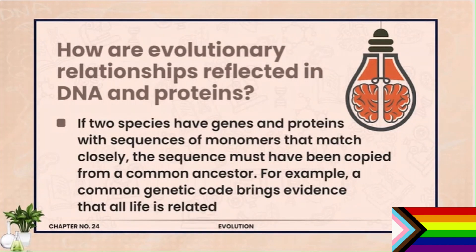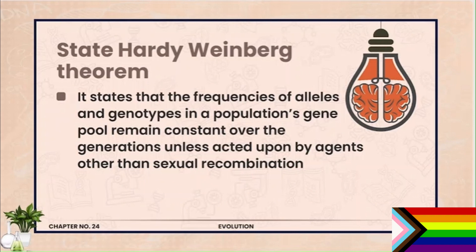Question number 7: How are evolutionary relationships reflected in DNA and proteins? If two species have genes and proteins with sequences of monomers that match closely, the sequence must have been copied from a common ancestor. For example, a common genetic code brings evidence that all life is related. Question number 8: State the Hardy-Weinberg theorem. The frequency of alleles and genotype in a population remains constant over generations unless acted upon by agents other than sexual recombination. This is the Hardy-Weinberg theorem. The equation is P² + 2PQ + Q² = 1, where P is the dominant allele and Q is the recessive allele.